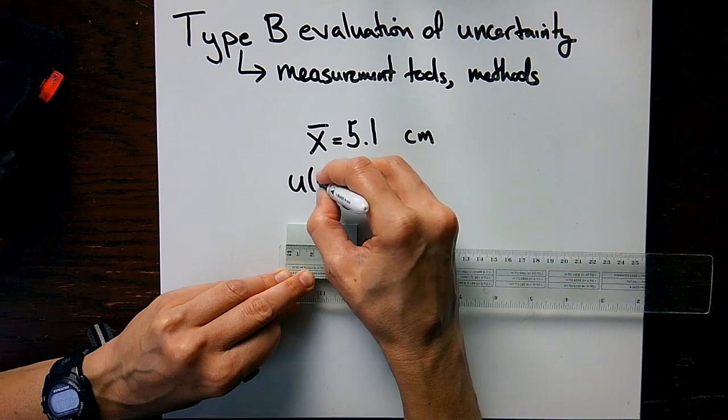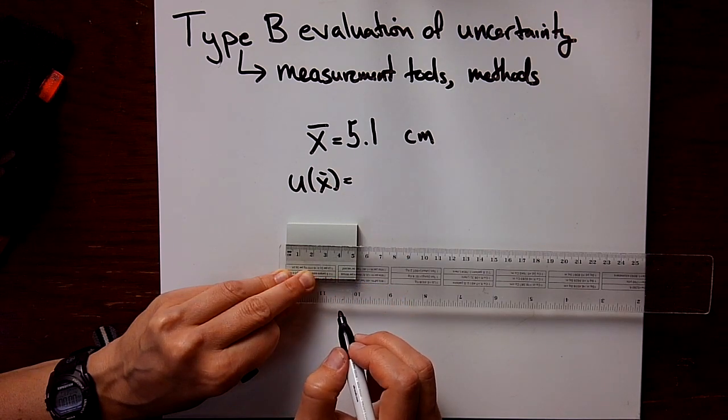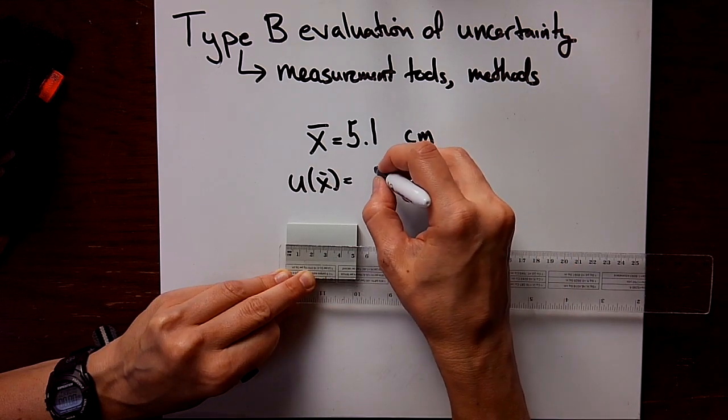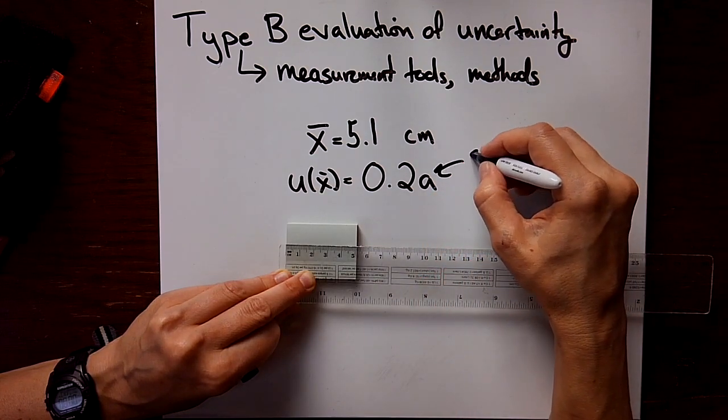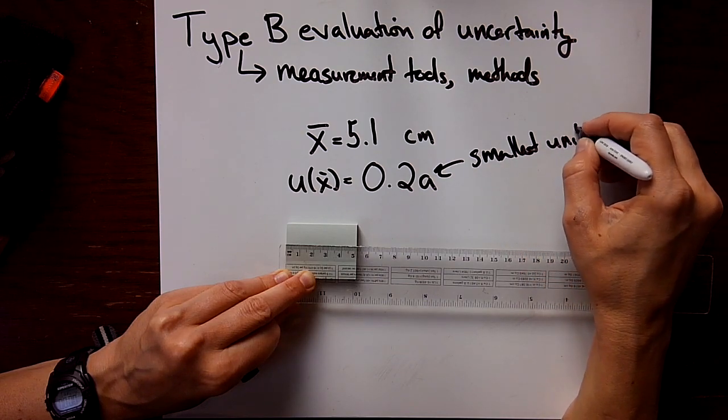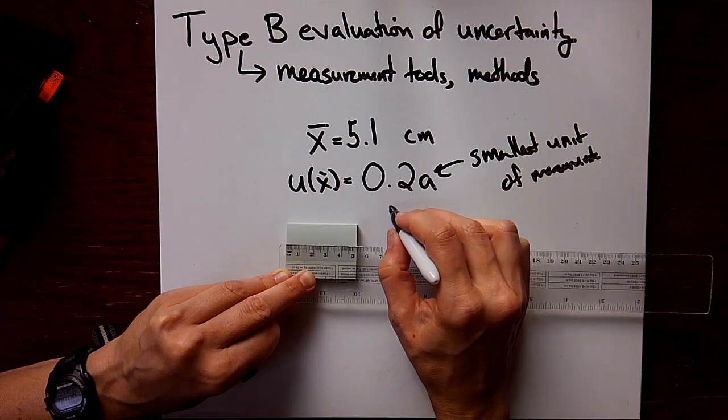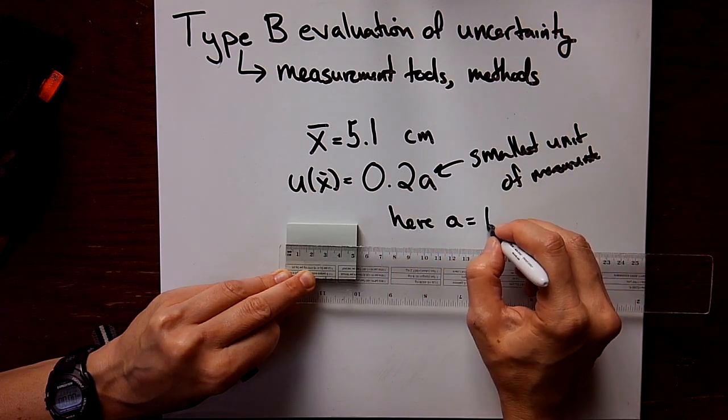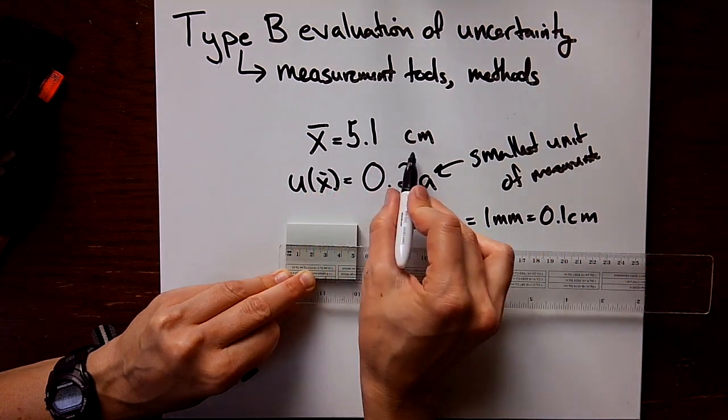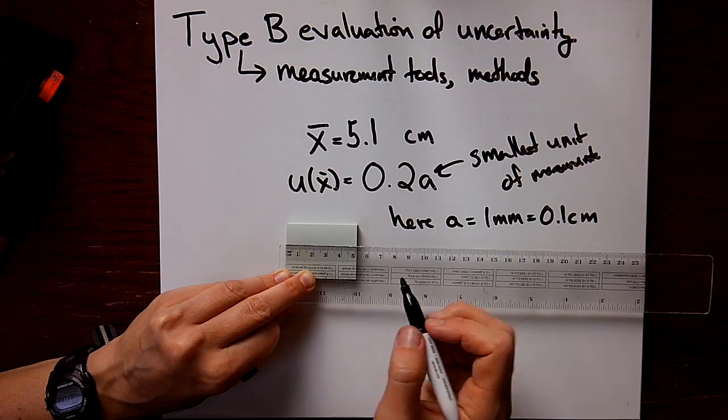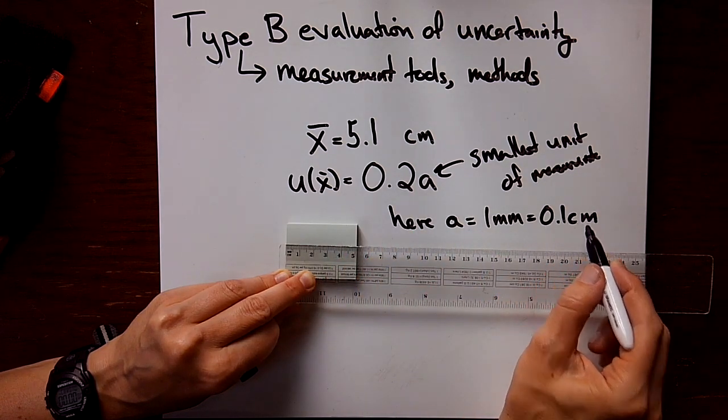And then for the uncertainty, u of the distance. I've got the ruler set up to measure to the best of its ability. So I would use the rule that would say it's an analog instrument. It's going to be 0.2 times a, where a here is not acceleration, but rather the smallest unit of measurement. For this ruler, a is one millimeter or 0.1 centimeter, since that's what I made my actual measurement in.